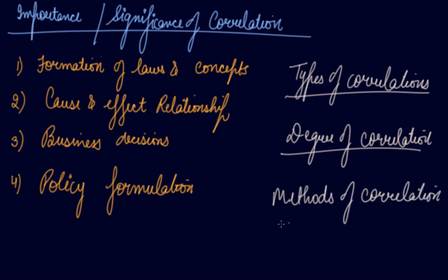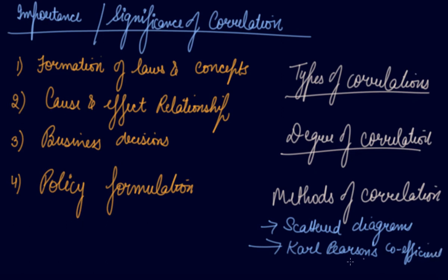In short, there are three methods of correlation. Number one is scattered diagrams. Then we have Karl Pearson's coefficient of correlation.